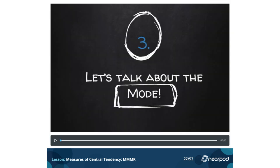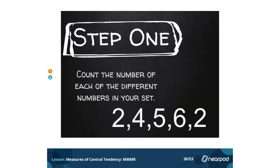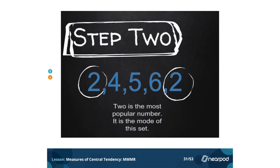Let's talk about the mode. The mode is the most frequently appearing number in the set — it's the most popular number. Step 1: count the number of each of the different numbers in your set. Here we have 2, 4, 5, 6, and 2. We have two 2s, one 4, one 5, and one 6. Step 2: find the most popular number. 2 comes up the most, so it is the mode in this set.